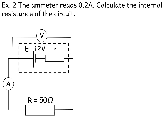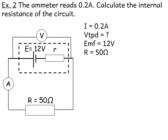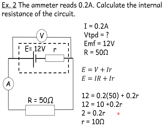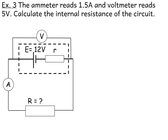Now let's try some calculation problems. A typical question: the ammeter reads 0.2 A — calculate the internal resistance of the circuit. Using the KFC technique, write down what's known: current I = 0.2 A, EMF = 12 V, load resistance R = 50 Ω. Since VTPd is unknown, we can't use the first equation, but we have I, R, and E, so we use the second equation. Plugging in the values gives an internal resistance of approximately 10 Ω.